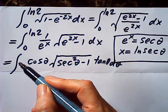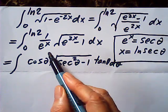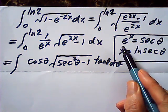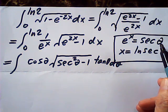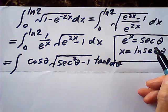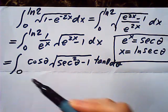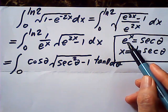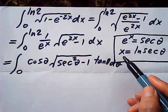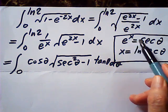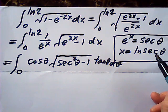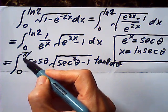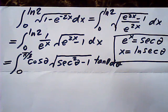The bounds have also been changed. When x equals 0, secant theta equals 1, which means theta equals 0. When x equals log 2, secant theta equals 2, which means theta equals pi over 3.